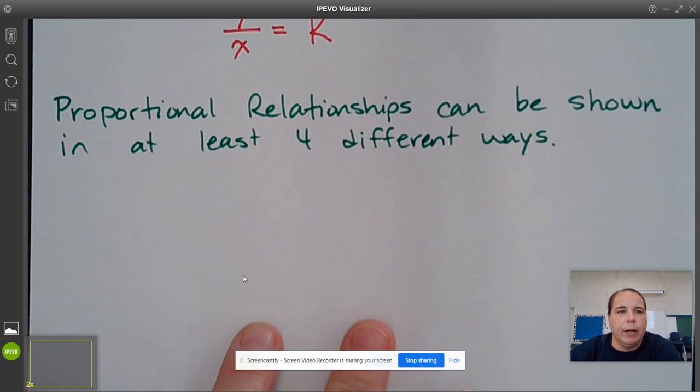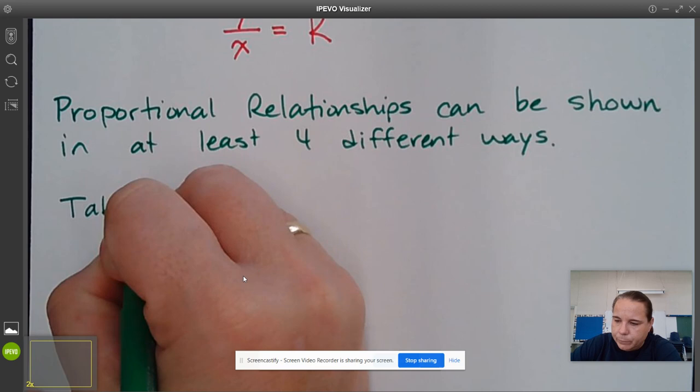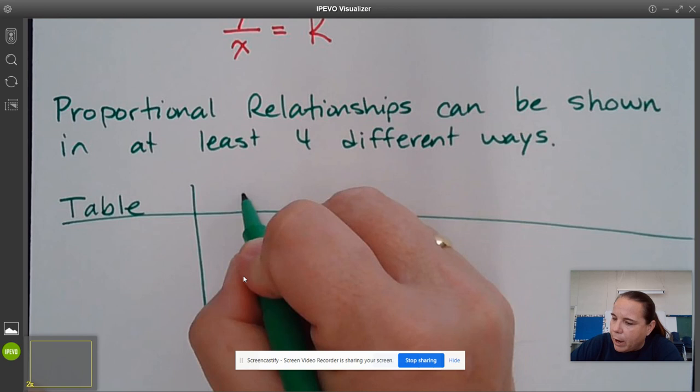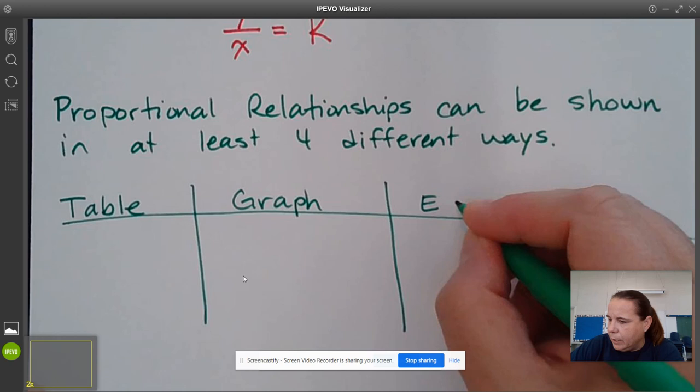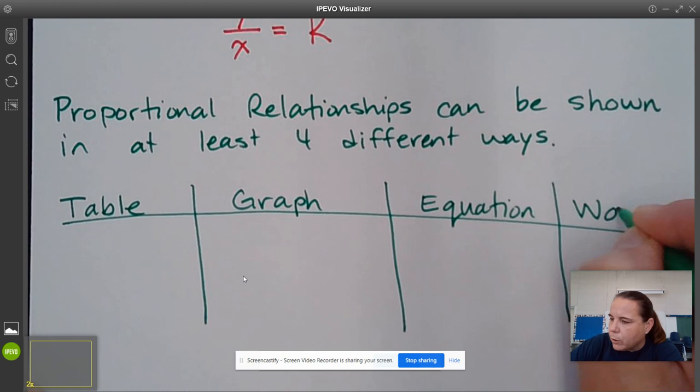And so part of what you're going to need to be able to do in eighth grade is look at relationships, proportional and non-proportional, that are represented in different ways and be able to compare them. So they can be represented in a table, they can be represented in a graph, they can be represented in an equation, and they can be represented by words.